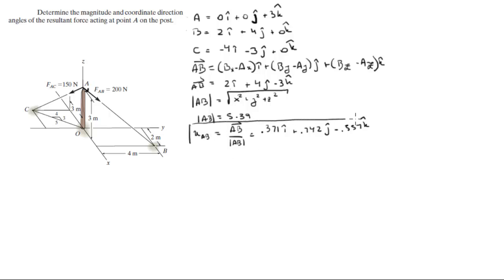This unit vector, when you multiply it by the force, the magnitude of the force AB is given at 200. So when you want to find the vector in Cartesian form, you just multiply the magnitude of the vector by the unit vector that we just calculated. And when you multiply each of these values by 200, you're going to get the vector that we're looking for which is 74.2i plus 148.4j minus 111.4k. So this is our first force vector.